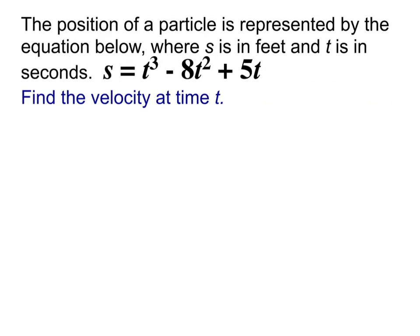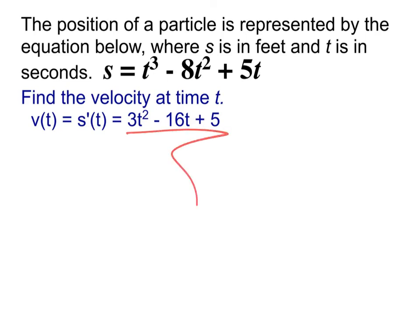Next up, I'd like you to find the velocity for this exact same situation. Please find the velocity at time t. Hopefully you're remembering that velocity is the derivative of the position. So to find that velocity, we're doing the derivative of our S function. Our derivative is 3t squared minus 16t plus 5.